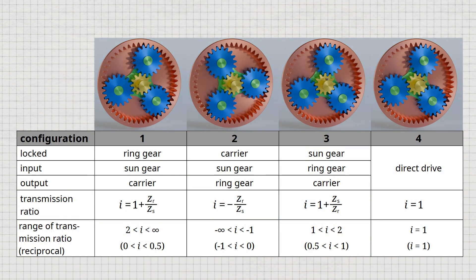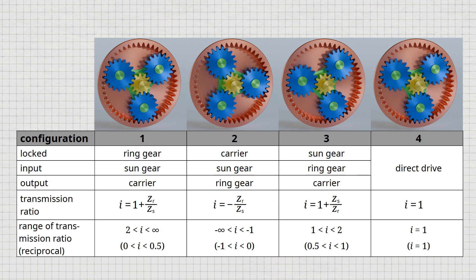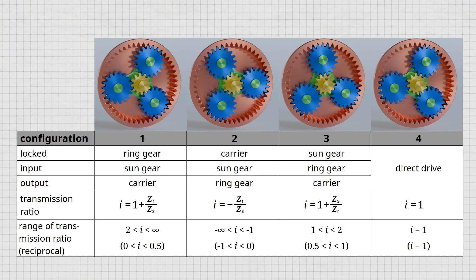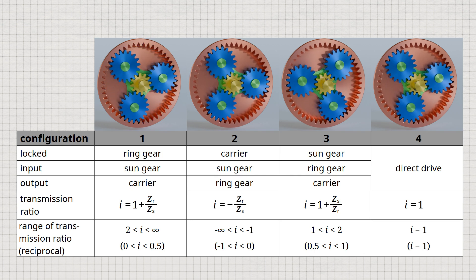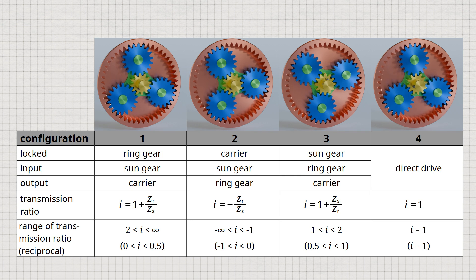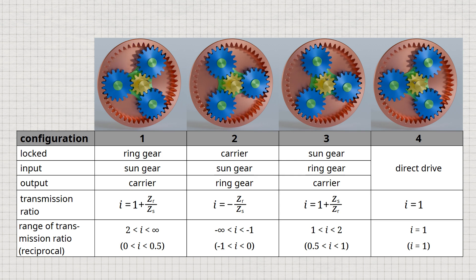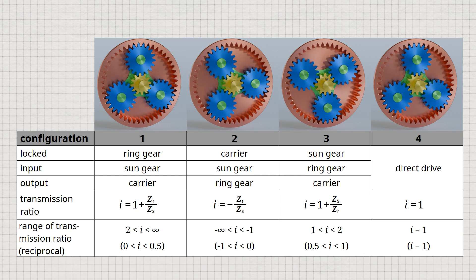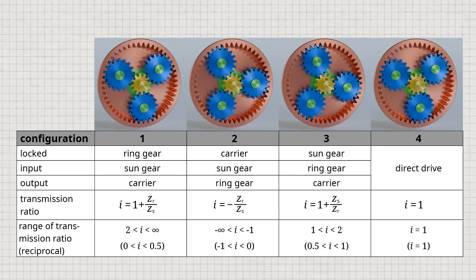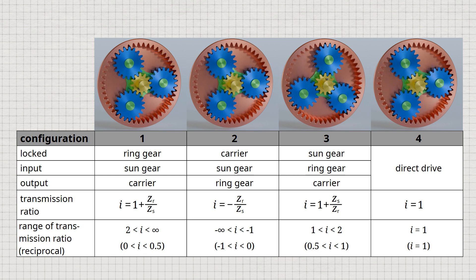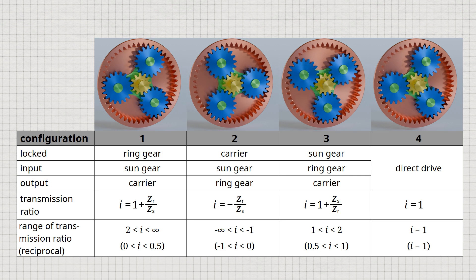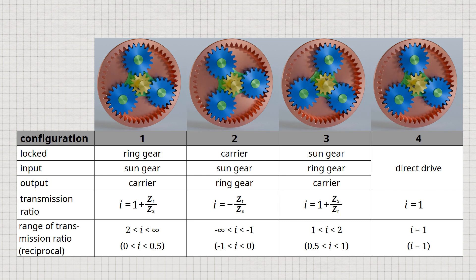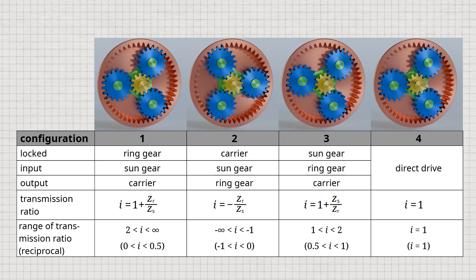The various possible gear ratios are summarized in a table. The transmission ratios with the input and output reversed are shown in brackets. Negative signs indicate a reversal of the direction of rotation. The derivation of the formulas for determining the transmission ratios is explained in detail in another video. It should also be noted that the number of teeth of the planet gears has no influence on the transmission ratio for any configuration. The shifting of the various transmission ratios is carried out in shiftable gearboxes by so-called clutches, which enable the locking of individual components depending on the desired transmission ratio.